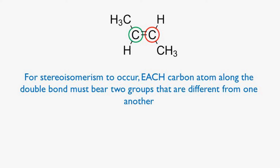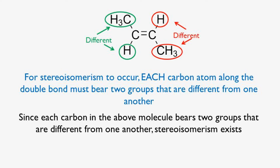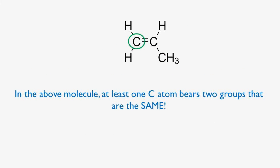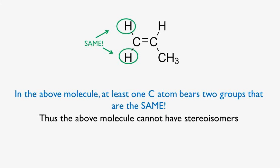Rule number seven. For stereoisomerism to occur, each carbon along the double bond must bear two groups that are different from one another. In the first molecule, each carbon bears two different groups — one carbon has a methyl and a hydrogen, the other also has a methyl and a hydrogen. Since methyl and hydrogen are different groups, stereoisomerism exists. In the second molecule, at least one carbon atom bears two groups that are the same. Looking at the left carbon, it has two hydrogen atoms — both hydrogens are the same group. Thus, this molecule cannot have stereoisomerism.